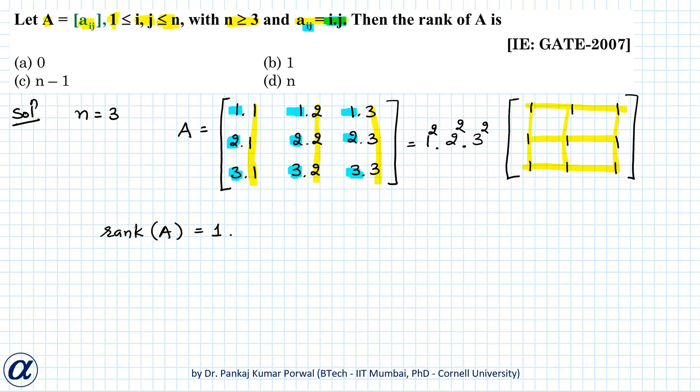So when n equals 3, our options will become, c will be 2 and d will be 3. So there is only one correct answer when n is 3 and that is b. So b is our correct answer for all values of n greater than or equal to 3.